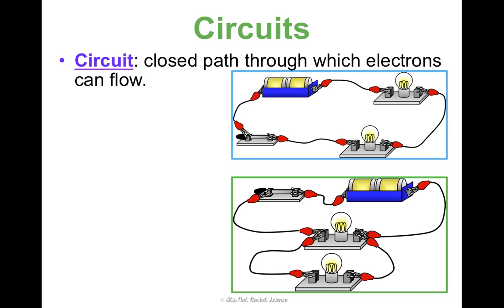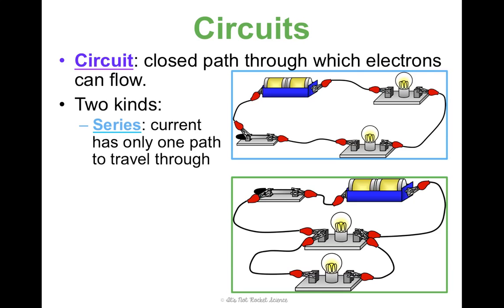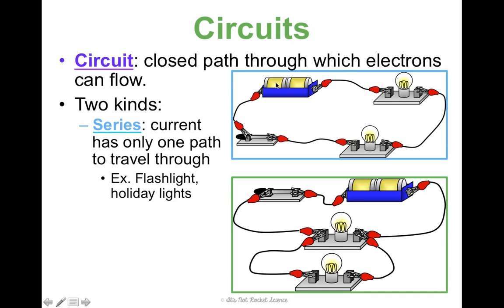There are actually two main kinds of circuits that we find: series circuits and parallel. A series circuit has only one path to travel through — that's like this top picture you see here. We've got our battery, our wire, our conductor, our switch — it's closed so our light bulbs are on. Notice that out of our battery, there's only one pathway for that current to travel through.